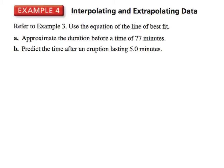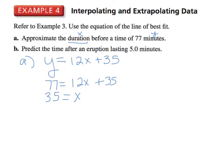Example number four, interpolating and extrapolating data. Refer to example three, use the equation of the line of best fit, and we want to approximate the duration before a time of 77 minutes and predict the time after an eruption lasting five minutes. From example three, we know that the equation was y equals 12x plus 35. Well, since we want to approximate the duration before a time of 77 minutes, that means we want to find x. x represented the duration of minutes and y represented the time. So our equation would be 77 equals 12x plus 35. Well, that's an easy equation to solve. We subtract 35, divide by 12, the value of x would be 3.5. So in part A, the eruption lasts about three and a half minutes before a time of 77 minutes.